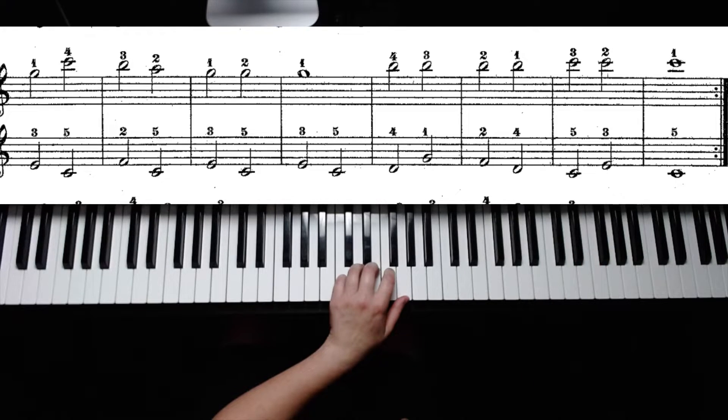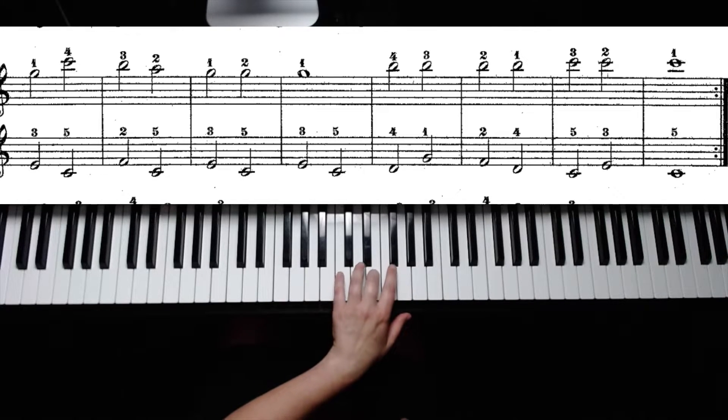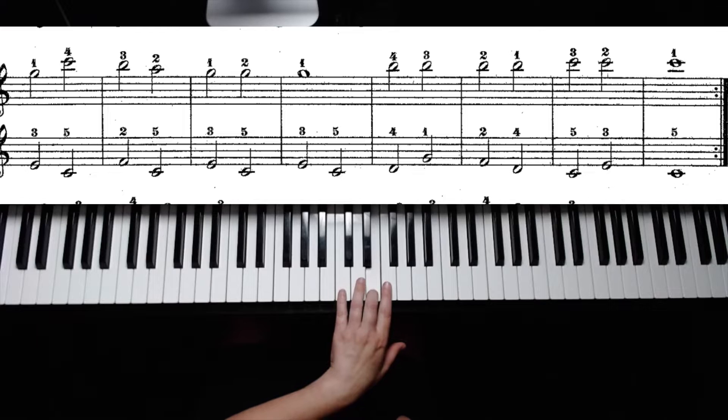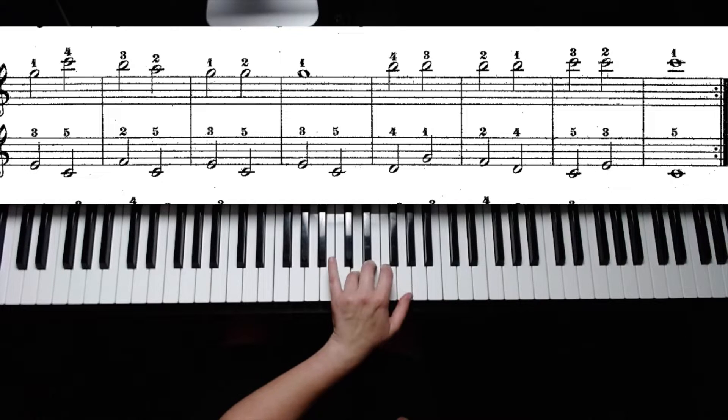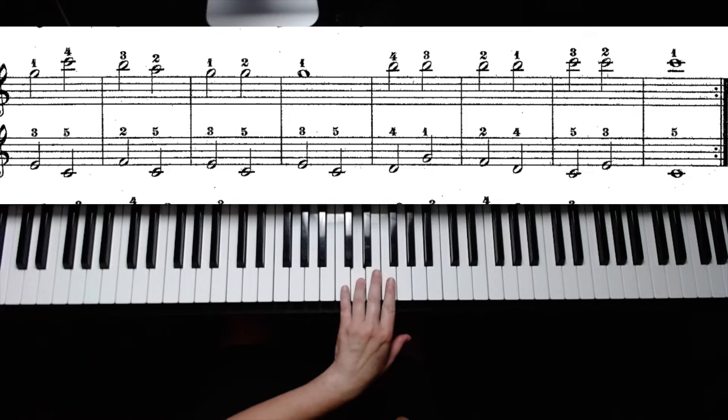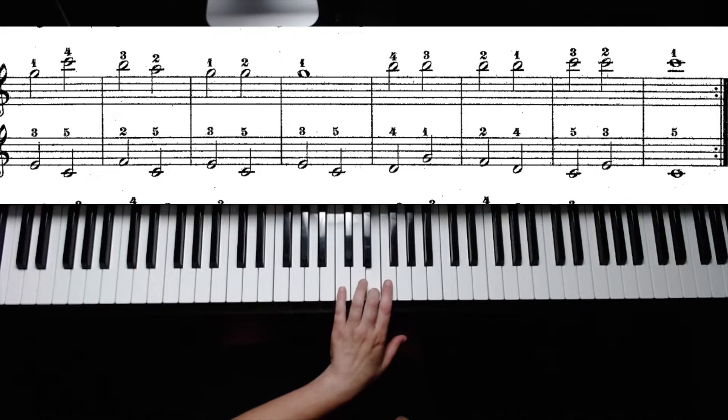The left hand in the second line starts off the same way as it did in the first line. We have E, C, F, C, E, C, E, C, D, G, F, D, C, E, C.